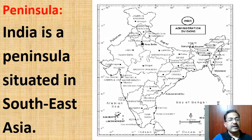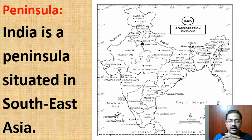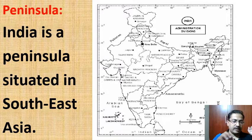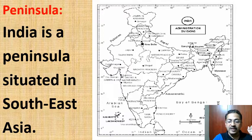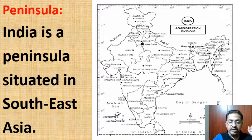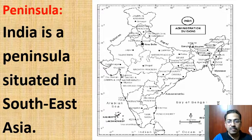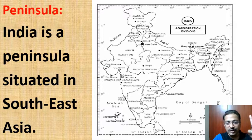Dear students, first of all, India is a peninsula. India is a peninsula of Asia situated in the South Asian part. What is a peninsula? Peninsula means land which is covered by water on three sides. For example, India: to the west is the Arabian Sea, to the east is the Bay of Bengal, and to the south is the Indian Ocean. India is covered by land — the Himalayas — in the north. Therefore India is called a peninsula.